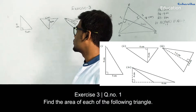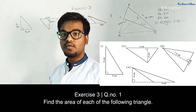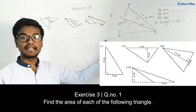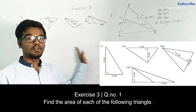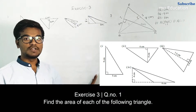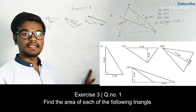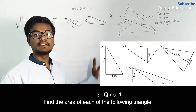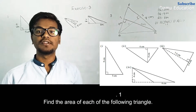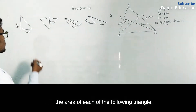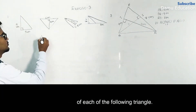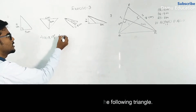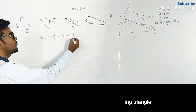For the first question, the base is the horizontal measurement we can see. For that corresponding base, the height is the vertical measurement. So all these we can call as heights. Area of triangle equals half into base into height.